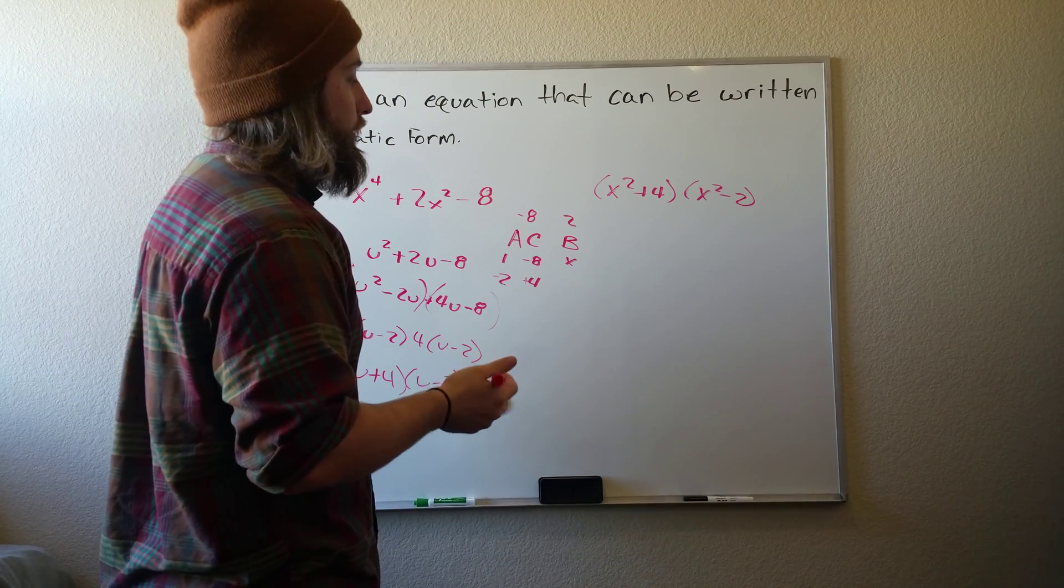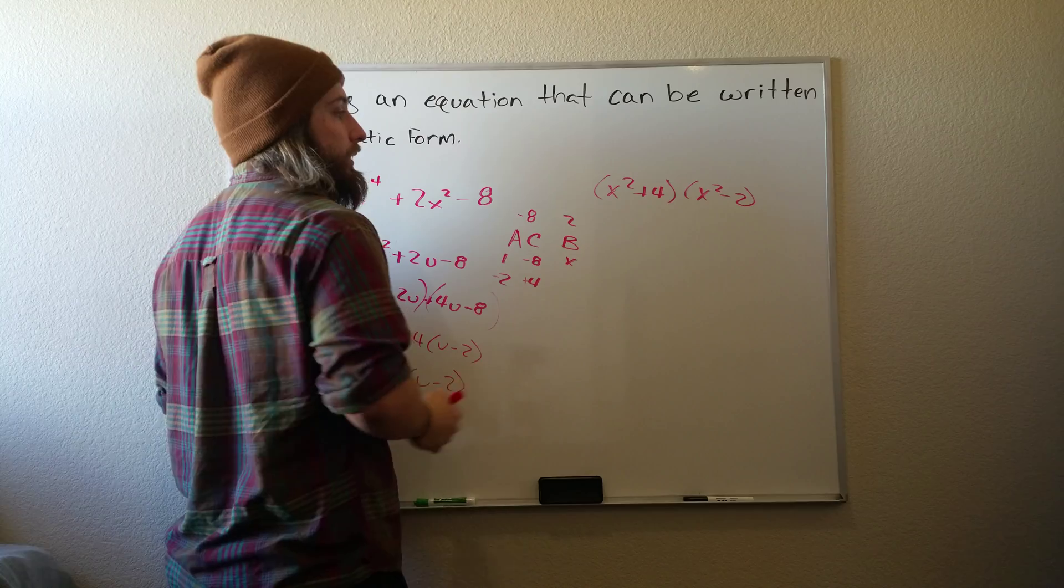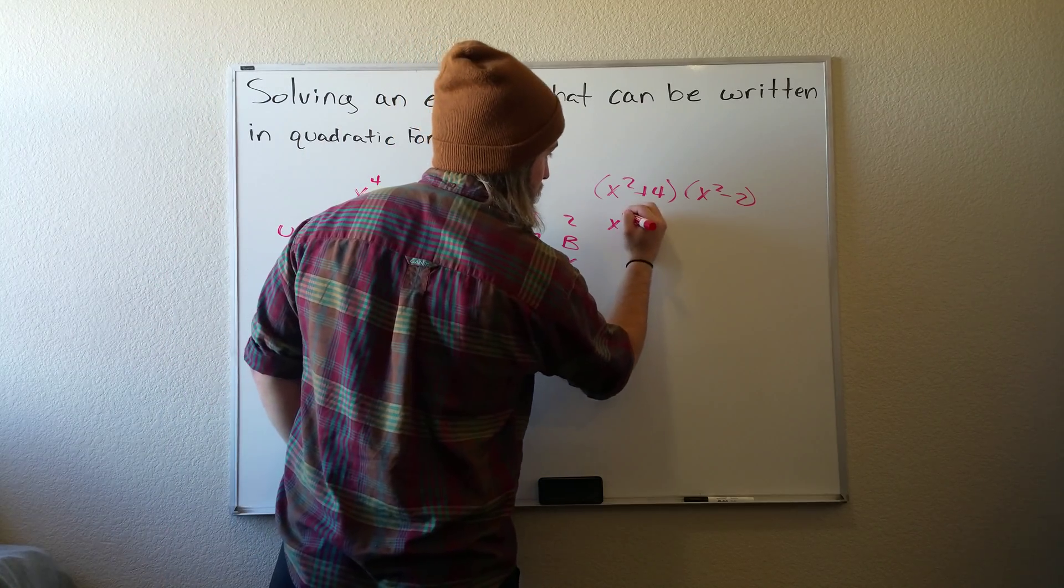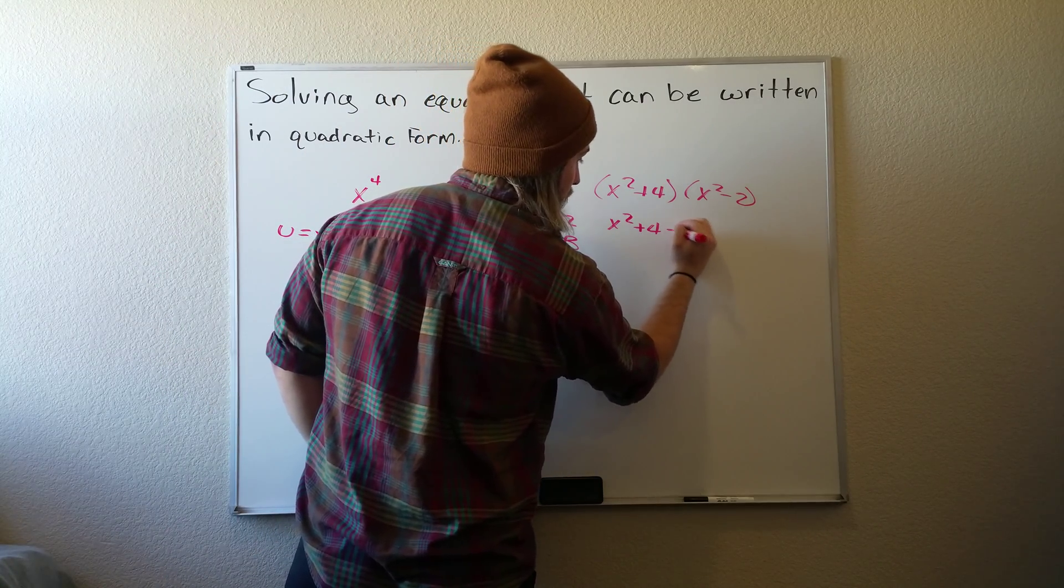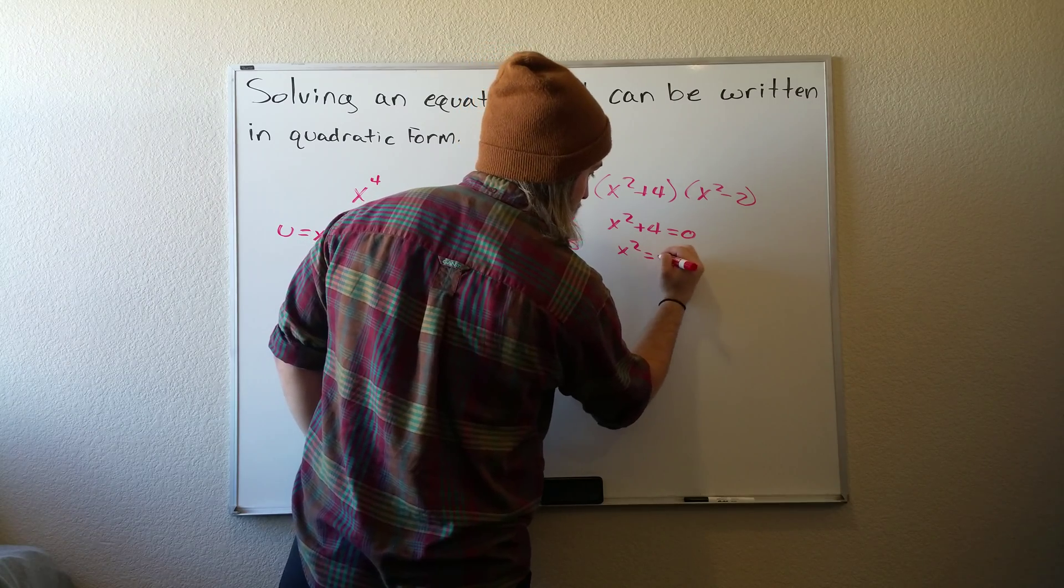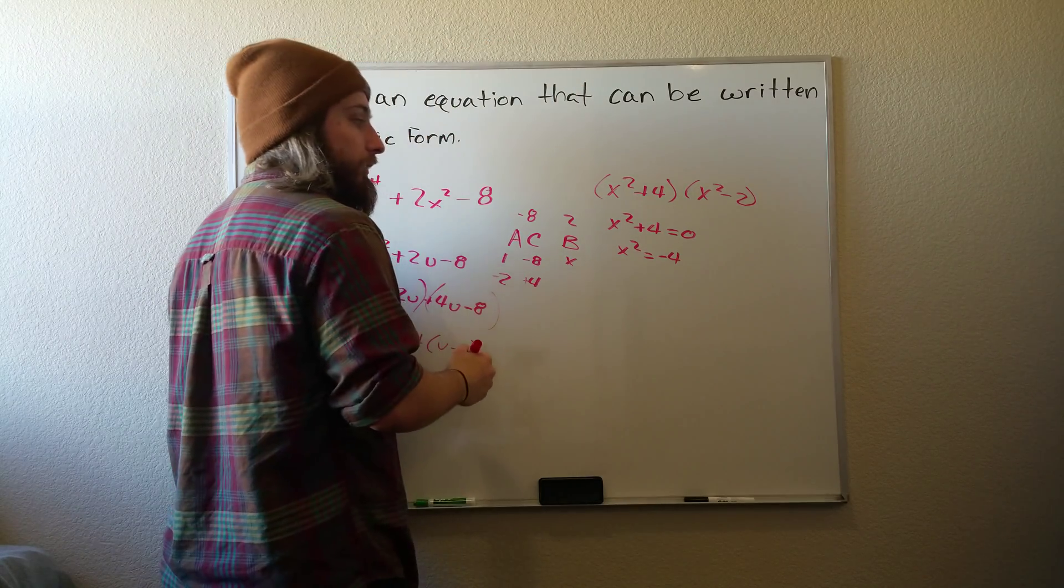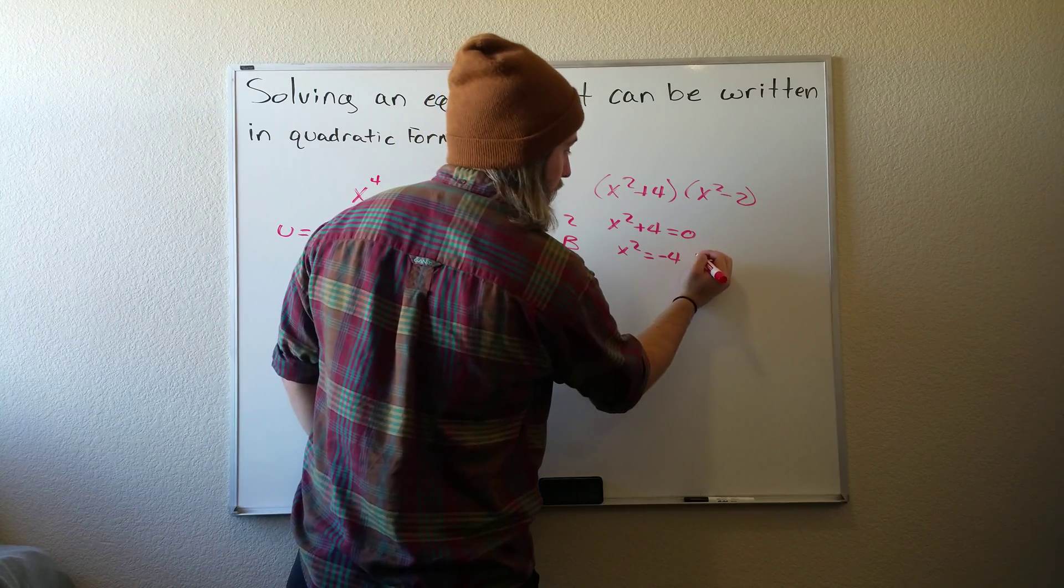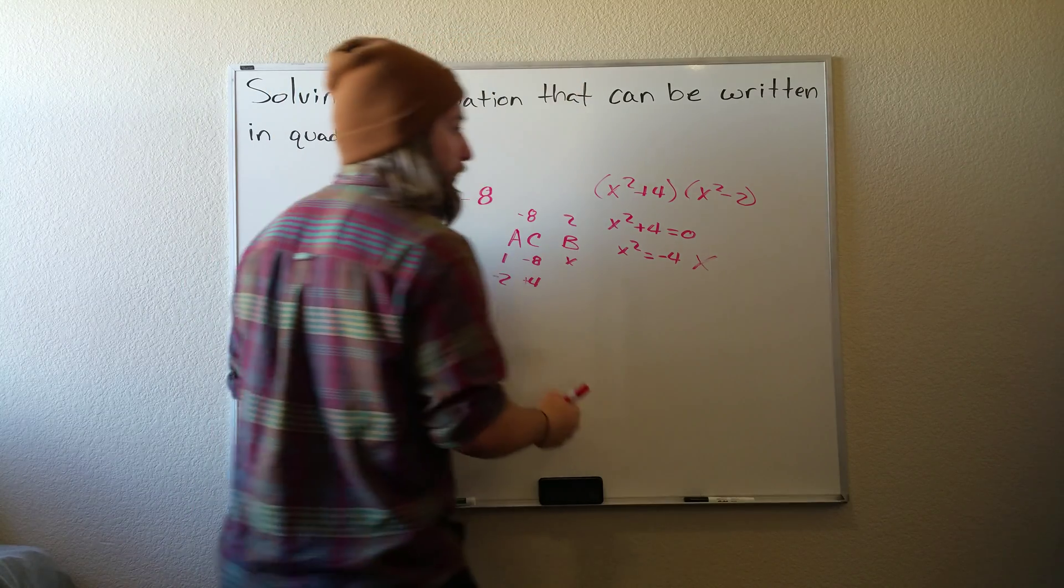And if we want to find the solutions, we just set both of these equal to 0. So we'll get x squared plus 4 equals 0. If we solve for x, we get x squared equals negative 4. We know squared terms can't be negative, so this one can't be a solution.